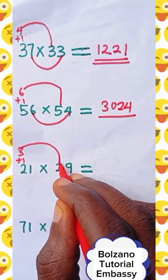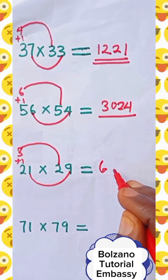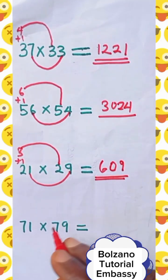1 times 9 is 9, which is 09, and that's the answer. So perform this and drop your answer. Thank you for watching.